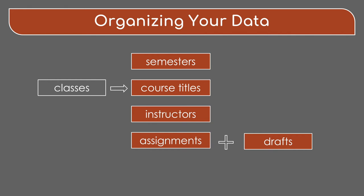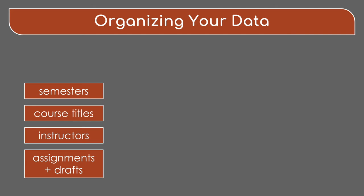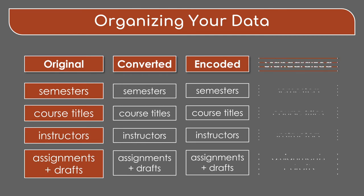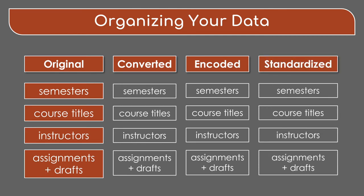For the sake of simplification, we combined the assignment names and the draft number together as the bottom layer of folders. One more folder layer is useful to add on top of this folder structure with the name "original," so that you can store the collected files in their original format. Later, you may want to convert the original files into plain text, add headers, or de-identify the text. At that point, you may then create "converted," "encoded," or "standardized" folders with the same folder structure.